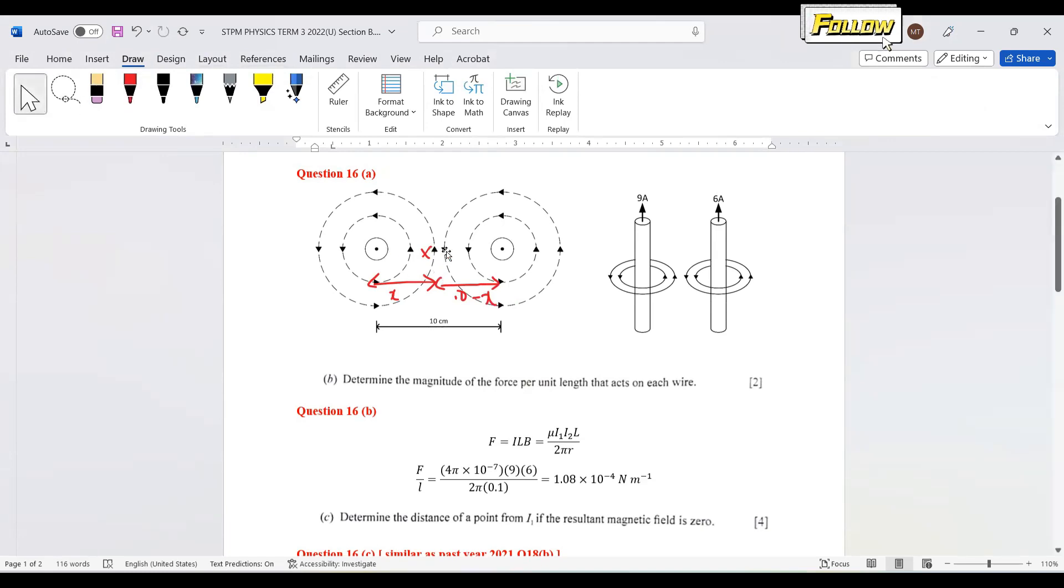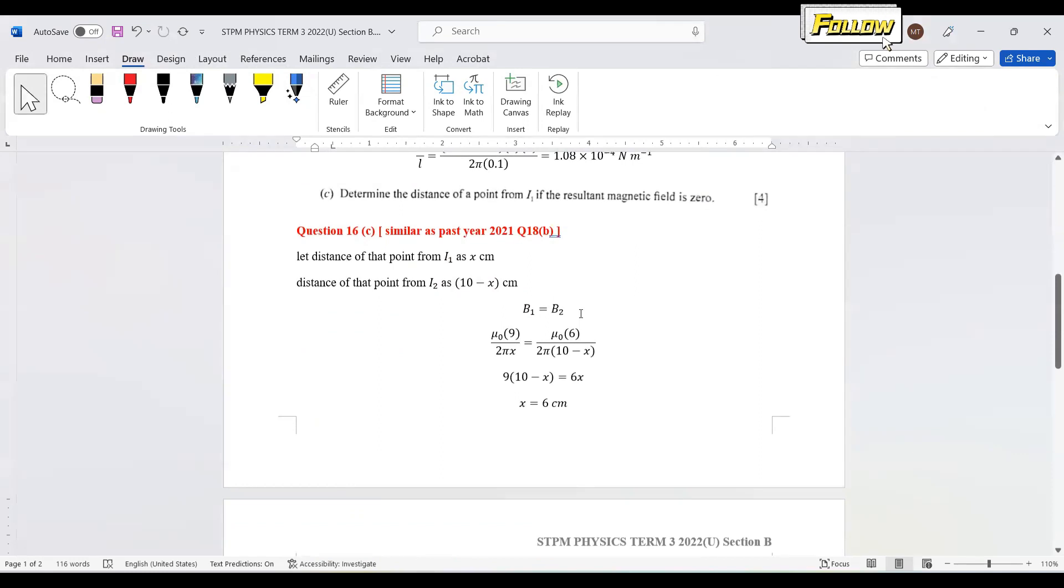What we have is that this is a point where both magnetic fields are equal. That's why they cancel each other and it has 0 resultant magnetic field. So from here we have B1 equal to B2. As B equals μ₀i/2πr, just put in the values.